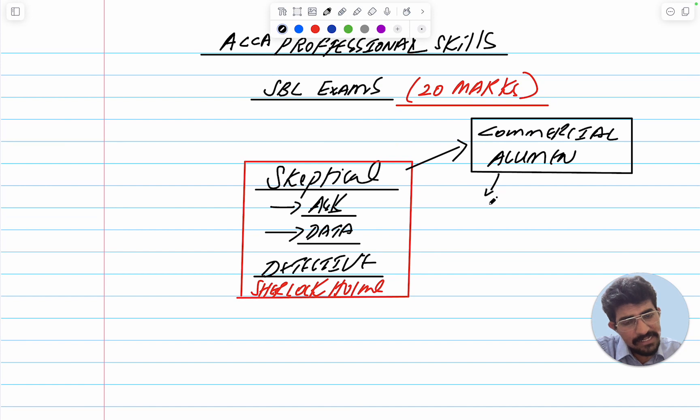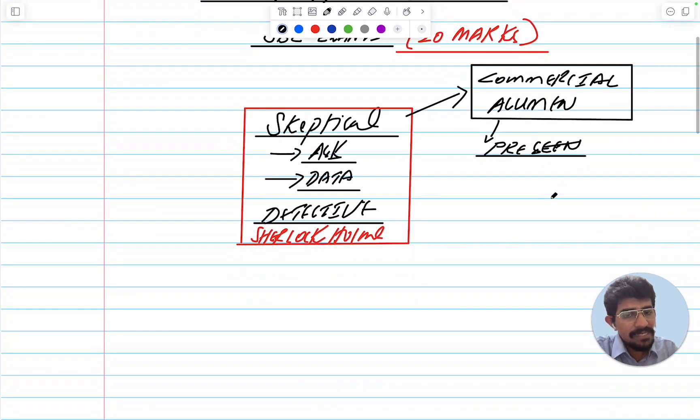The commercial acumen can be effectively gained using the pre-seen material. That doesn't mean you have to memorize it, but you have to understand the pre-seen material. For instance, a basic idea: a pharmaceutical business. If you see pharmaceutical business, the understanding is it is inelastic demand because people need medicines.